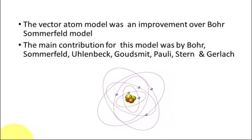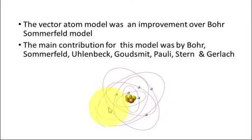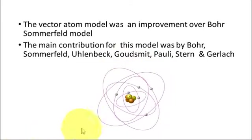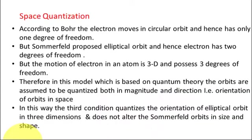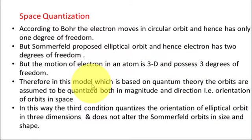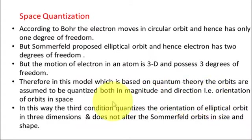As you can see in the figure, the electron has three-dimensional motion, which shows that the electron's motion is three-dimensional and it has three degrees of freedom. Therefore, in this model — which is based on quantum theory — the orbits are assumed to be quantized both in magnitude and direction, that is, in the orientation of orbits in space. This concept is called space quantization.